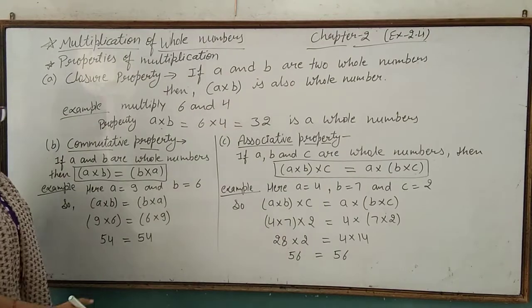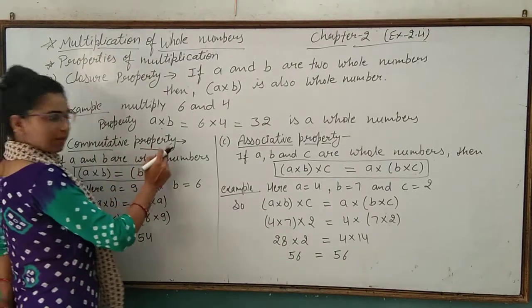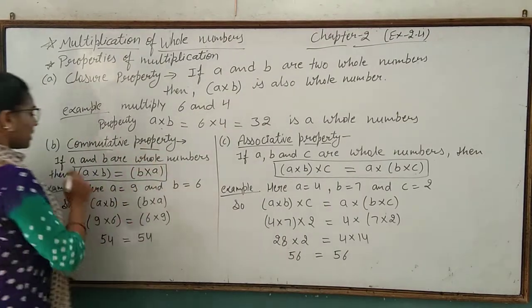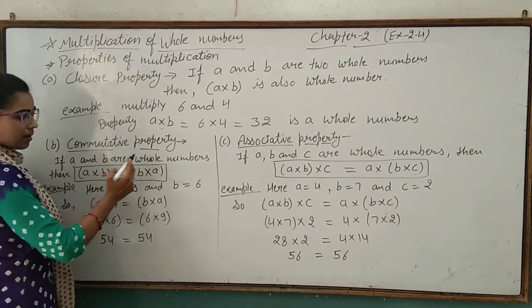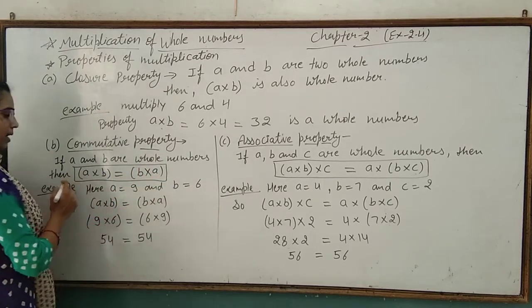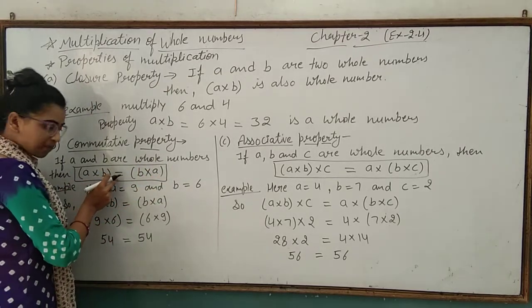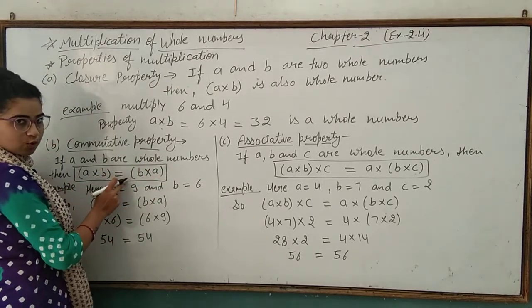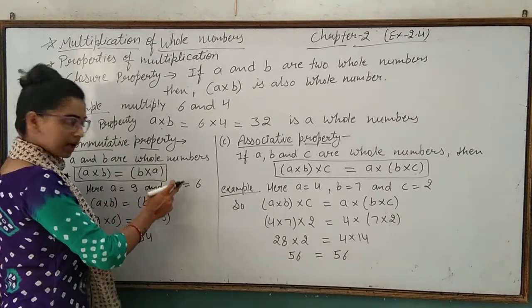The next property is the commutative property. If a and b are whole numbers, then a multiplied by b is equal to b multiplied by a.